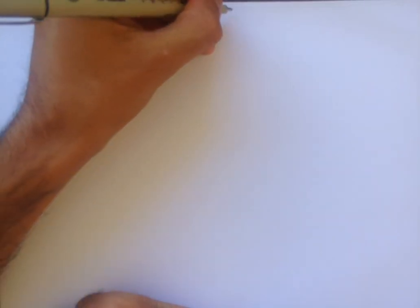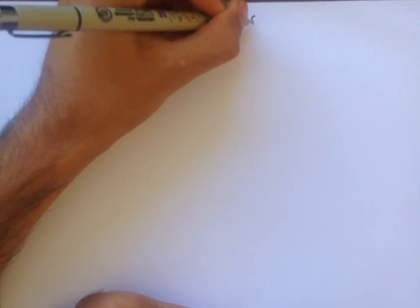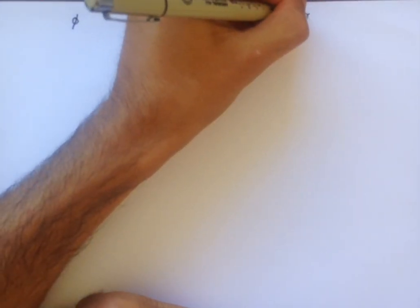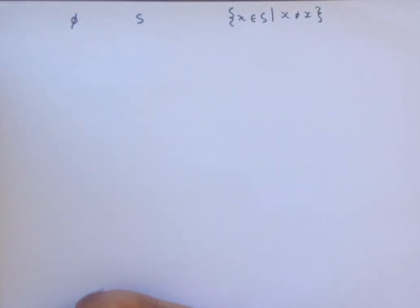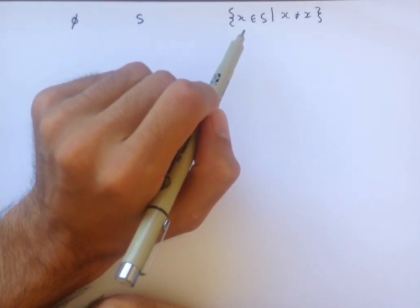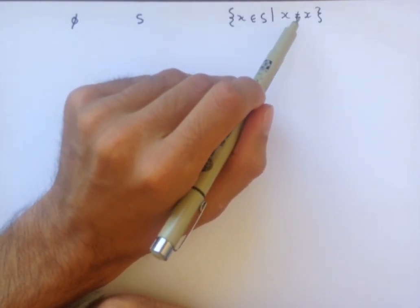To do this, we use first axiom 0, the axiom of set existence, to say that there exists some set S. And then, we use the comprehension scheme to create the set of all X in S, such that X is not equal to X. And so, if S was any non-empty set, any element that we would find in S would be removed when we did this construction, because there is no element that is not equal to itself.